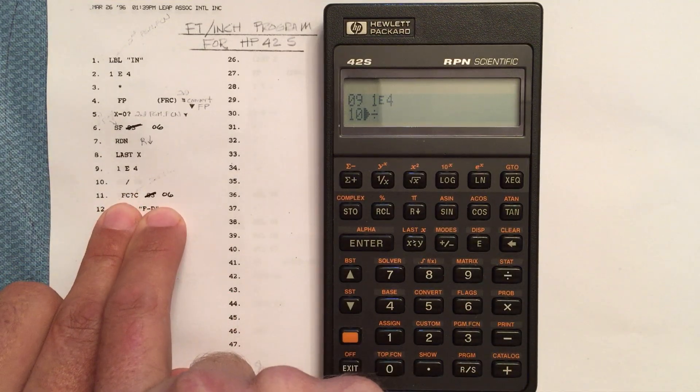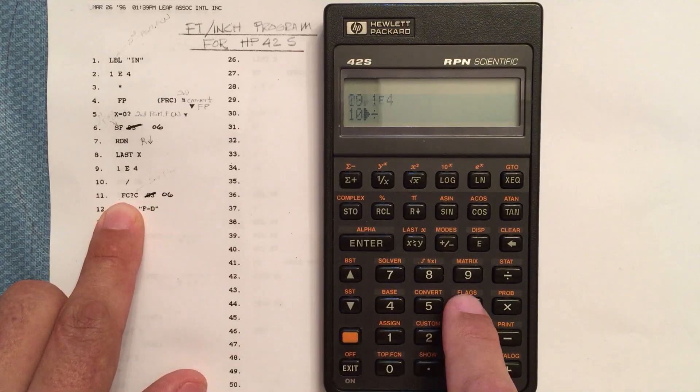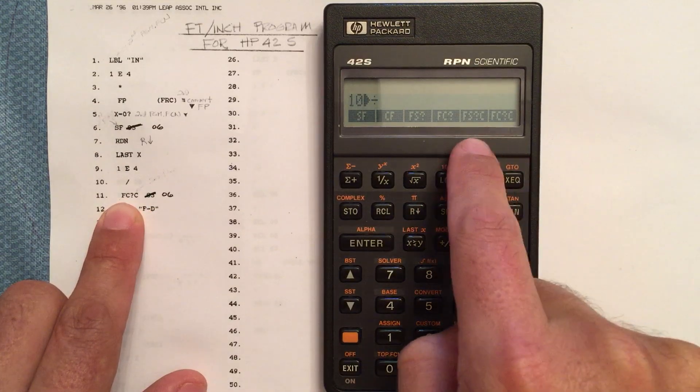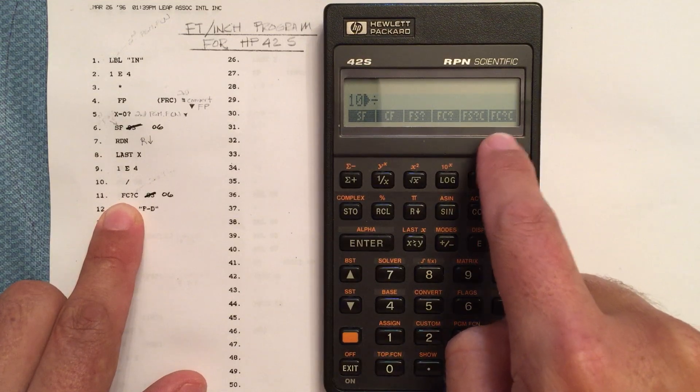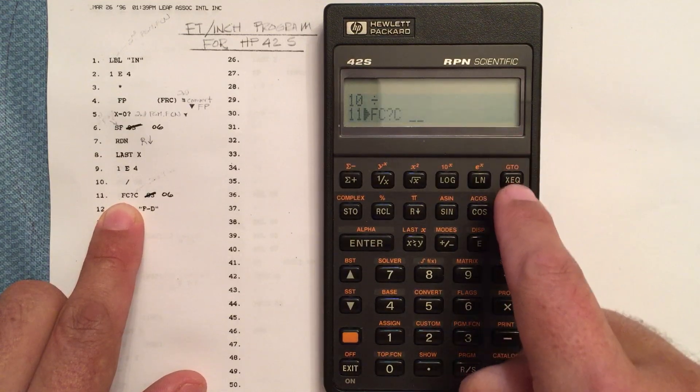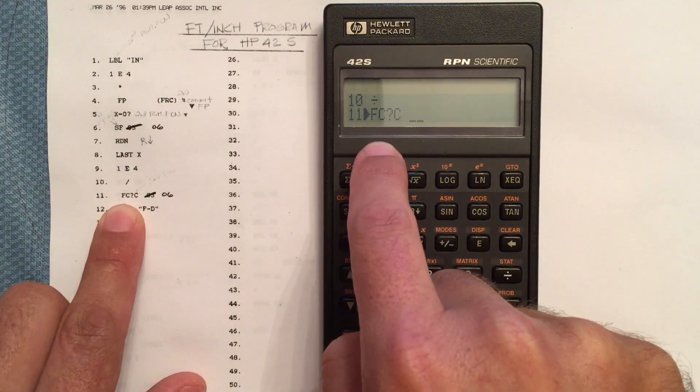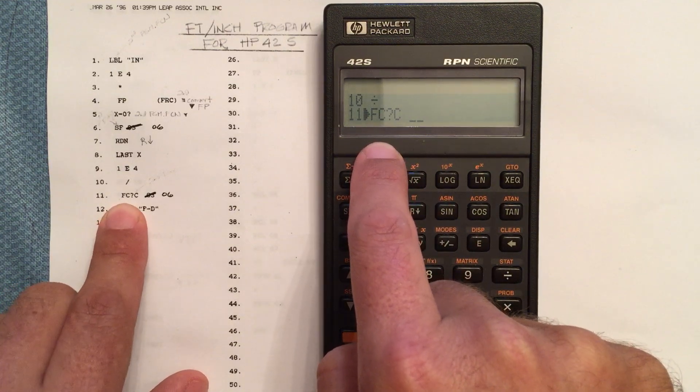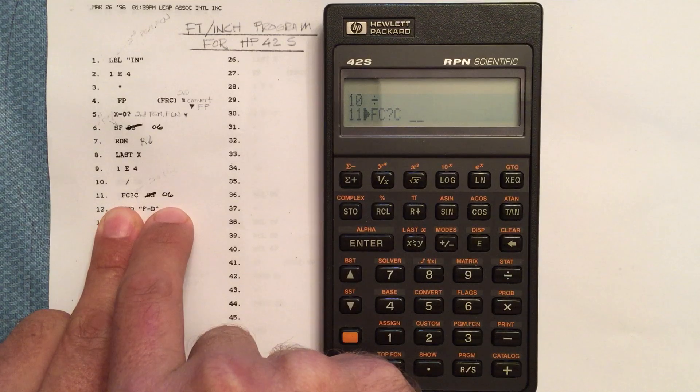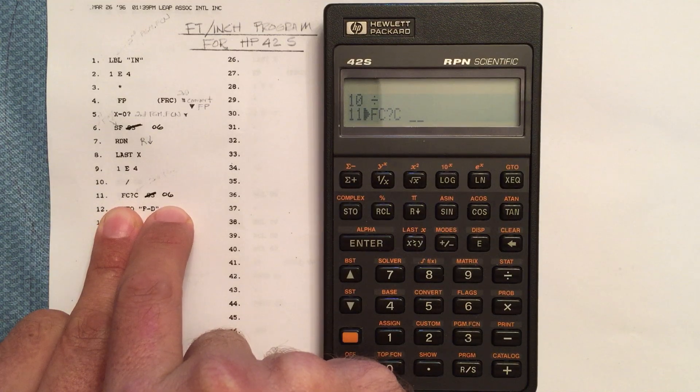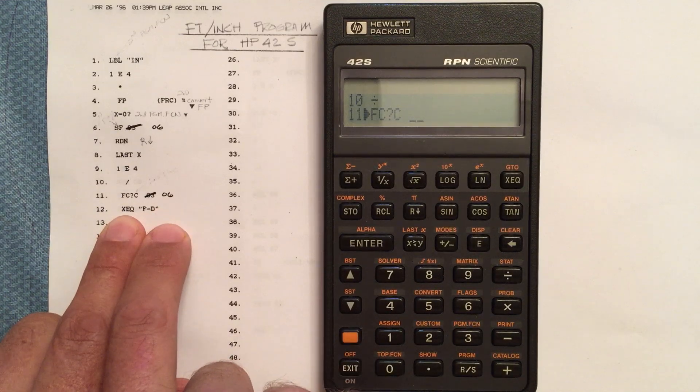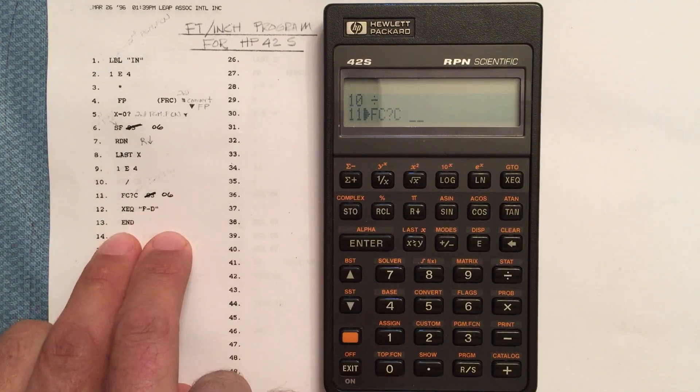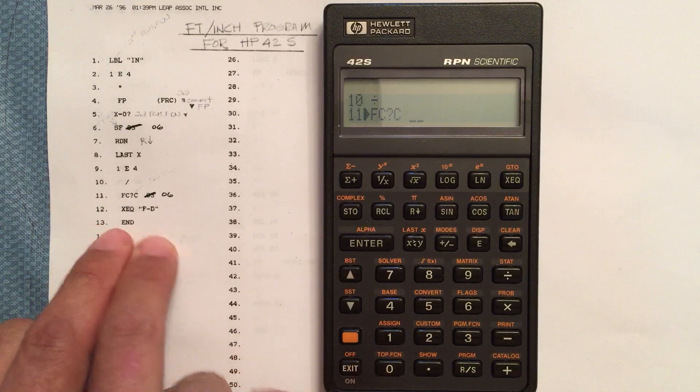Okay, this is flag clear. So this is going to be under the flag menu again, and we have different flag relationships. So flag, or FC, flag clear, and then what do you want to do? So this says, is flag 6 clear? If it is, then move to the next line. If it's not, then clear it and move to the line after that.